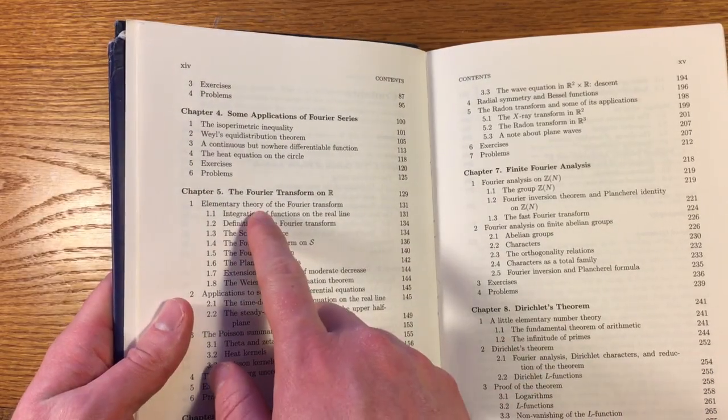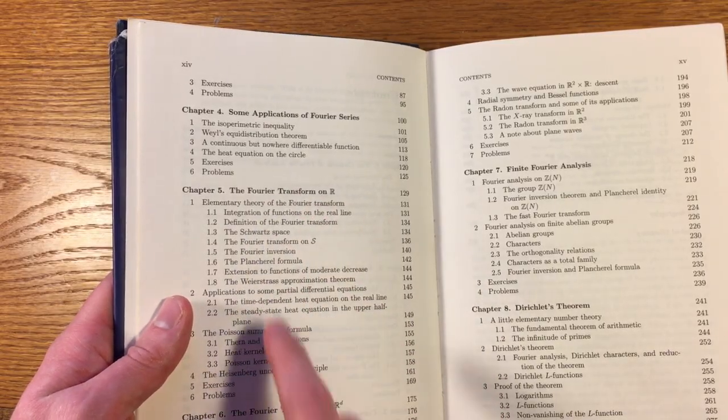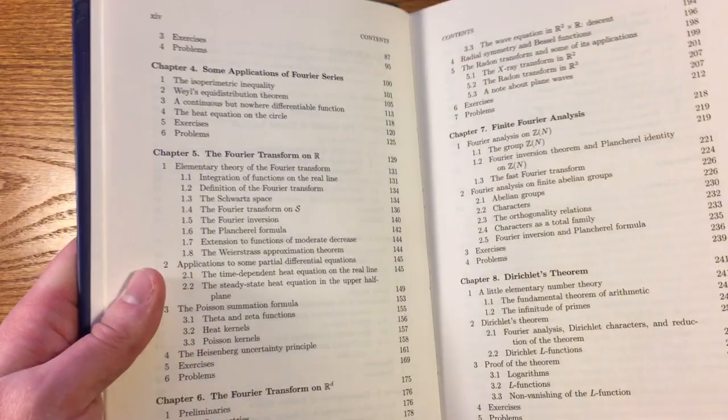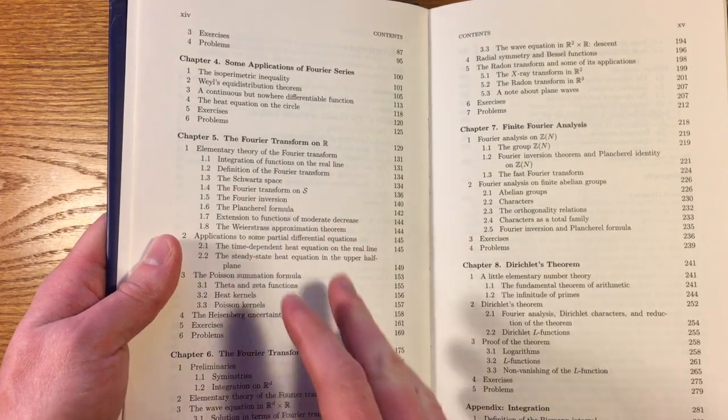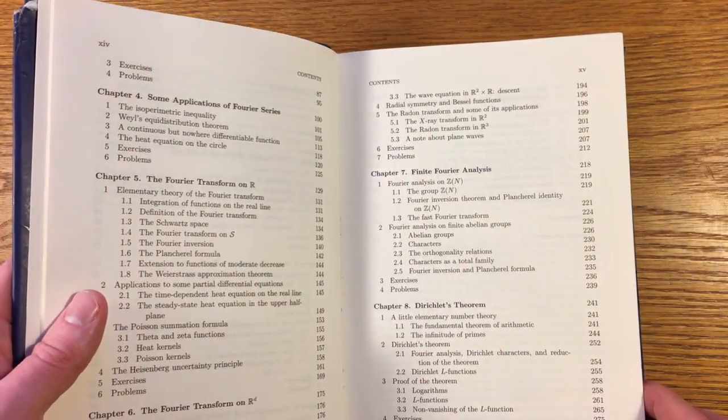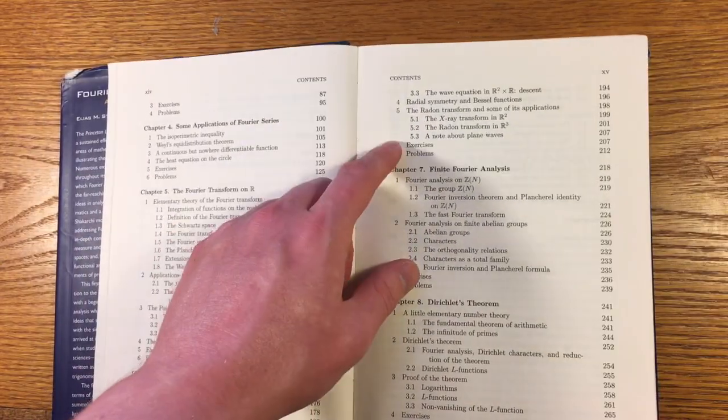The second part of this book is about the Fourier transform. There's both the Fourier transform on the real line and applications of the Fourier transform in space. And in those chapters, they're able to solve some equations in all of space. And they talk about the Radon transform and x-ray transform and medical imaging technology. That is great stuff.